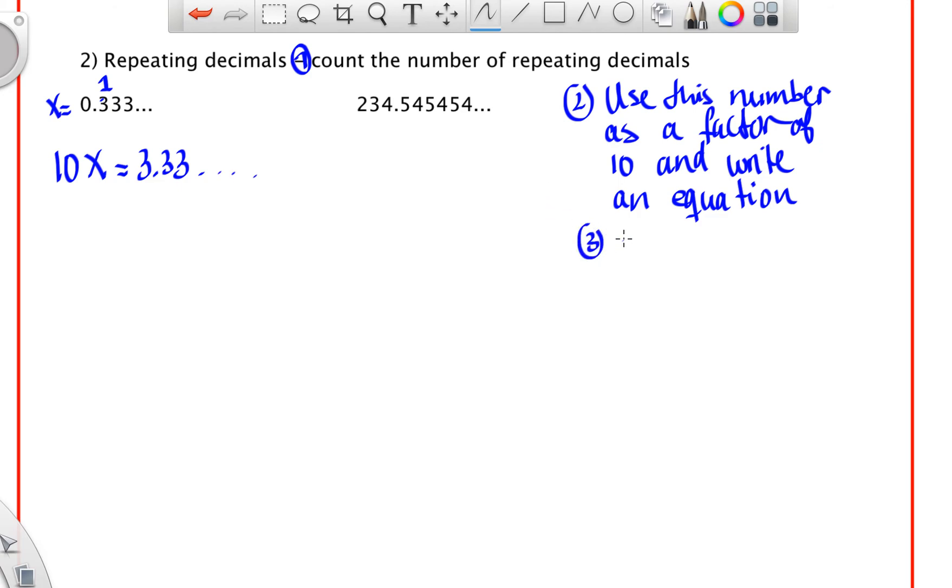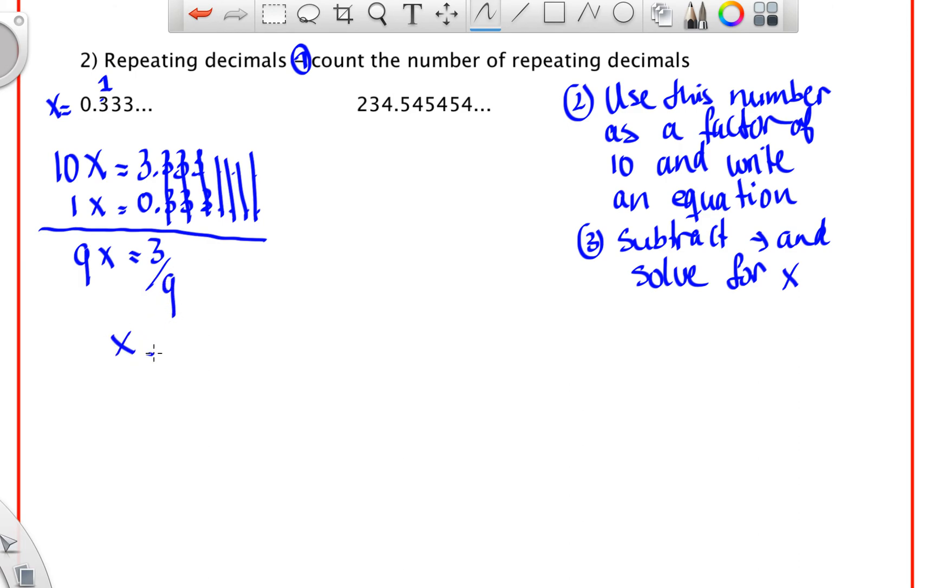And then the last step is subtract the two equations and then solve for x. So let's see, what do we do here? So that's one x and that's 0.33, three, three and then repeating. And then here you can sort of see why this works. And the next number here would also be a three. So every single one of these cancels each other when you start subtracting because three minus three is zero. So that's zero, that's zero, that's zero. And then here you would get three and ten minus one is 9x. And then you'd solve for x by dividing. So three over nine is one over three. So there you go. And that one clearly we knew but it also works with numbers that are slightly more difficult.